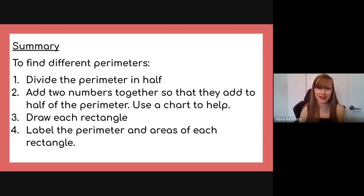And yeah, that's how you do that. So to summarize all of our learnings today, because this is the end of the lesson, to find different perimeters, divide the perimeter in half, add two numbers together so that they add up to half of the perimeter, use a chart to help, draw each rectangle, and label the perimeter and areas of each rectangle. And yeah, so that is the basics of our lesson today.